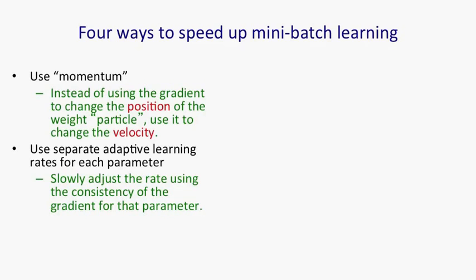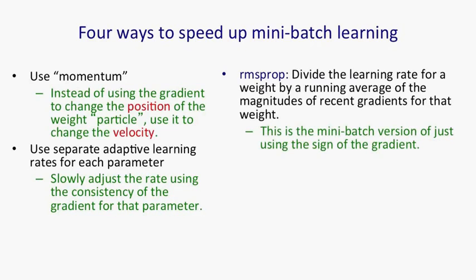A third method is what I now call RMSProp. And what we do in this method is we divide by a running average of the magnitudes of the recent gradients for that weight. So that if the gradients are big, you divide by a large number. And if the gradients are small, you divide by a small number. That will deal very nicely with a wide range of different gradients. It's actually a mini-batch version of just using the sign of the gradient, which is a method called RProp that was designed for full-batch learning.